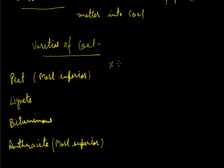Now let us see what is the percentage of carbon in these different varieties. Peat contains 50 to 60% carbon, lignite 60 to 70% carbon, bituminous variety of coal contains 75 to 80% of carbon, and anthracite variety of coal contains more than 90% carbon.